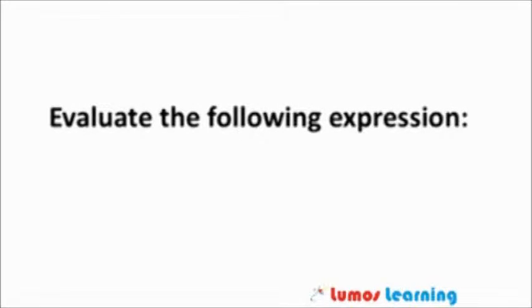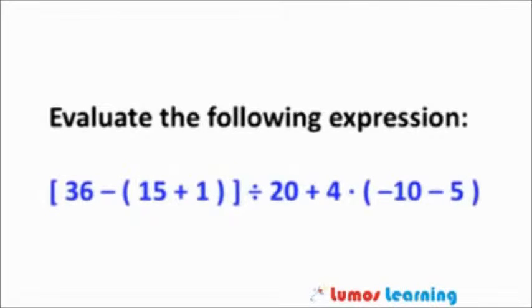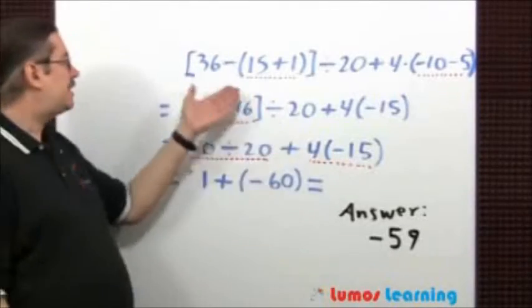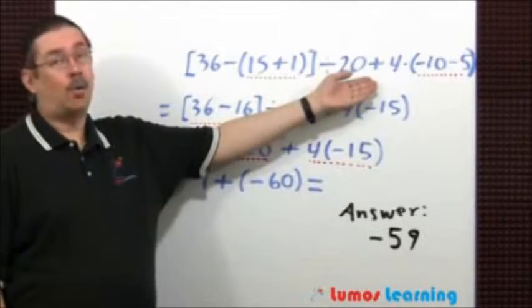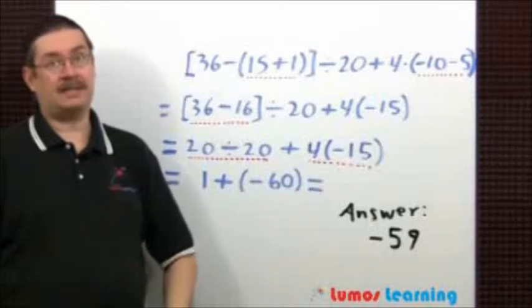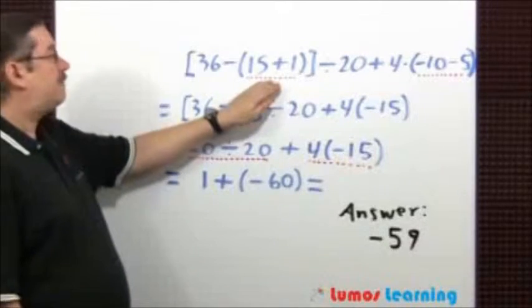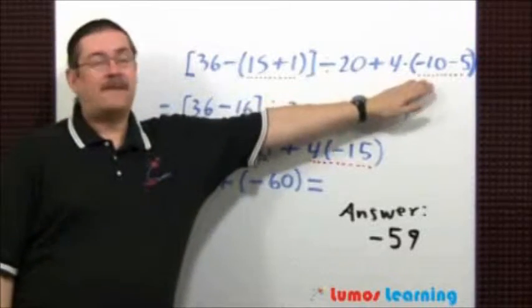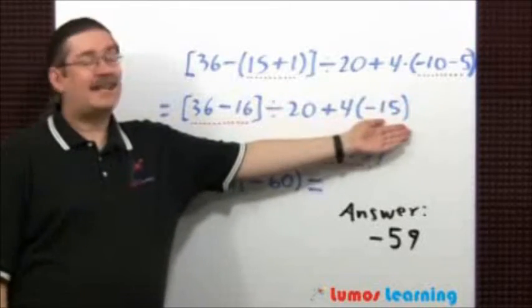Evaluate the following expression. To evaluate this expression, I'm going to use the order of operations by first calculating what's within grouping symbols. Here I have 15 plus 1, that's going to be 16. Negative 10 minus 5 is negative 15.